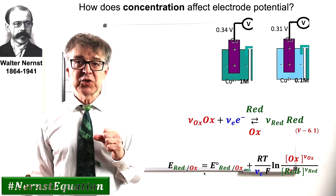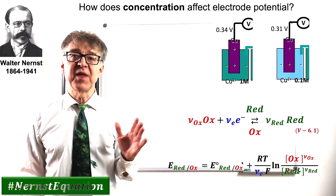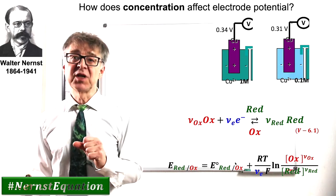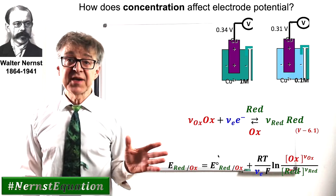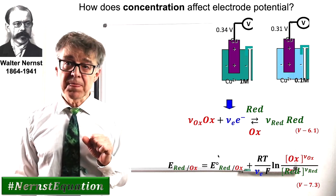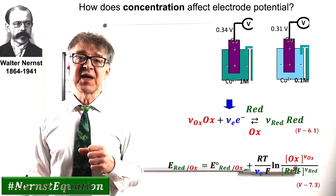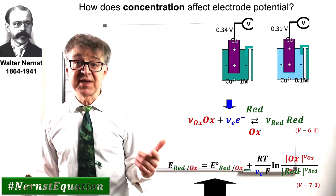The Nernst equation for an individual electrode consists of the individual standard potential E0 and a concentration dependent term. The standard potential E0 are tabulated in the electrochemical series.